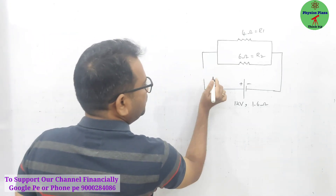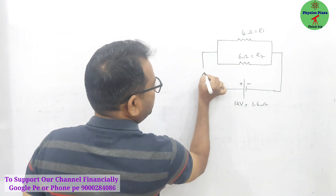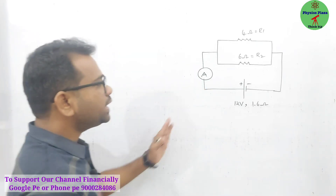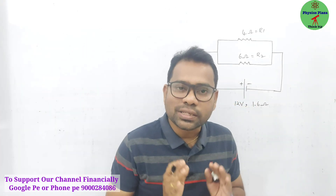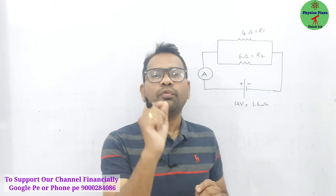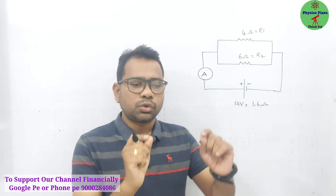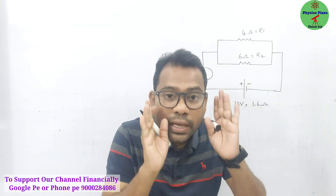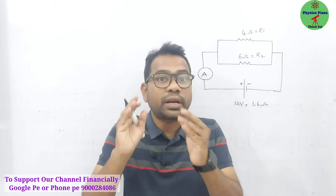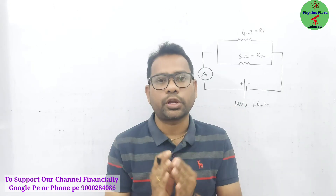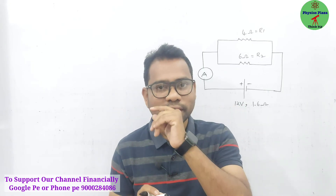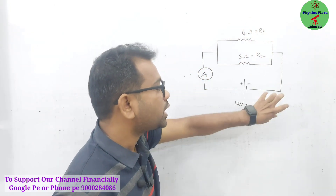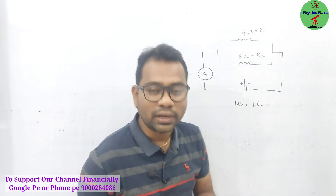The first question they may ask is: here one ammeter is there — they will ask you to calculate the reading of the ammeter, which indirectly means calculating the current. Don't forget that whenever we need to calculate the current, you must calculate the total resistance of the circuit — and when I say total resistance, you should add the external resistance and also consider the internal resistance.